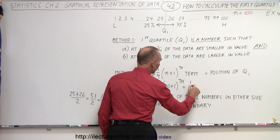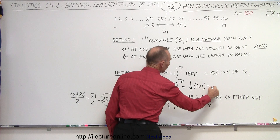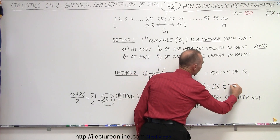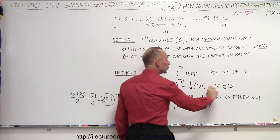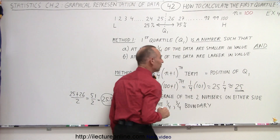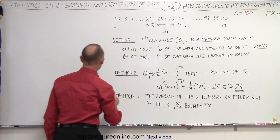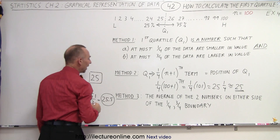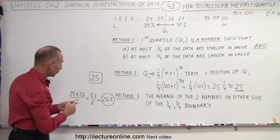That equals one-quarter of 101, which is 25.25. That is closest to the integer 25, so that would be the 25th position, which corresponds to the number 25. So using method 2, we have 25 as the first quartile.